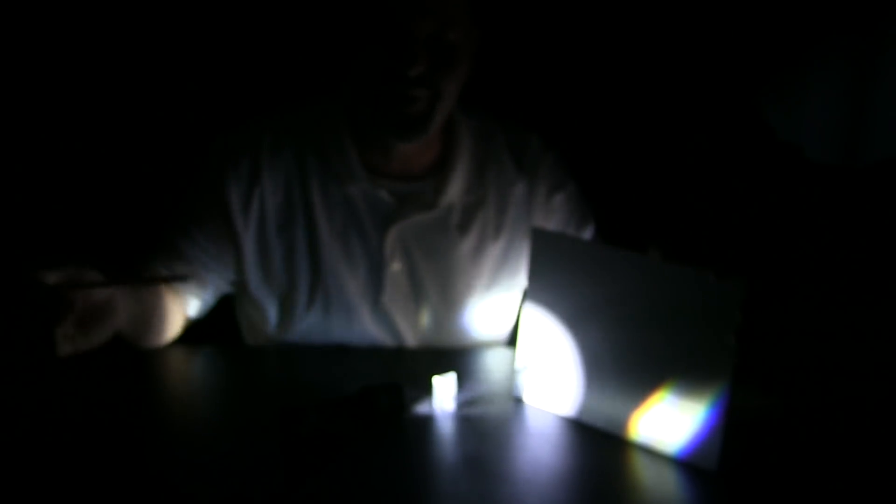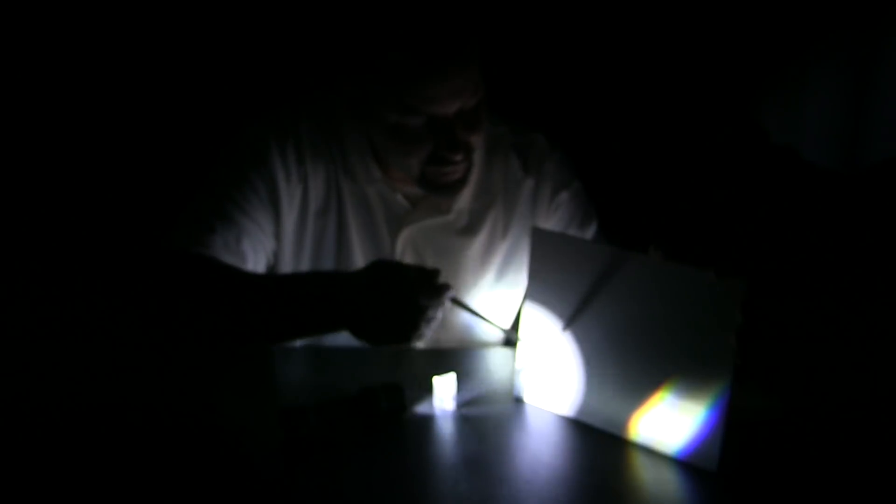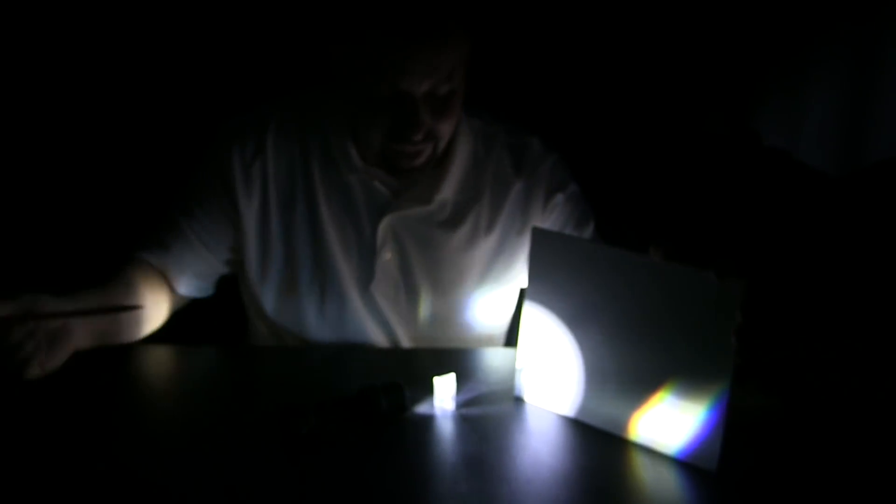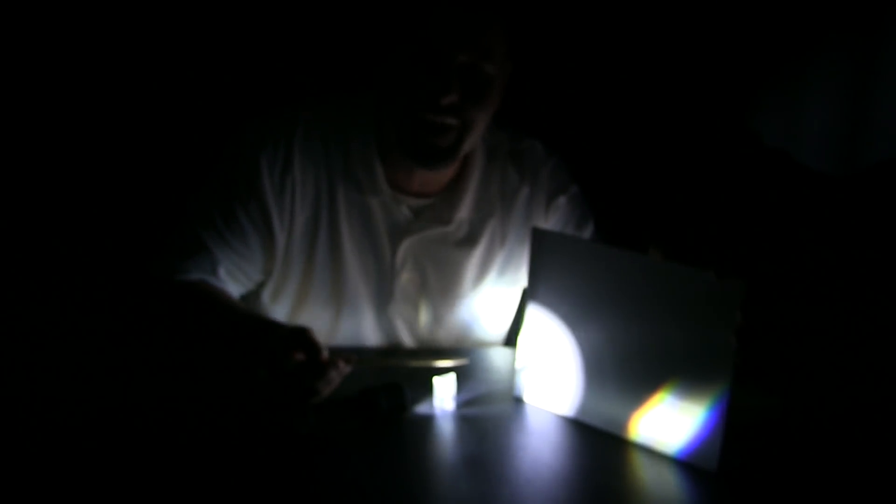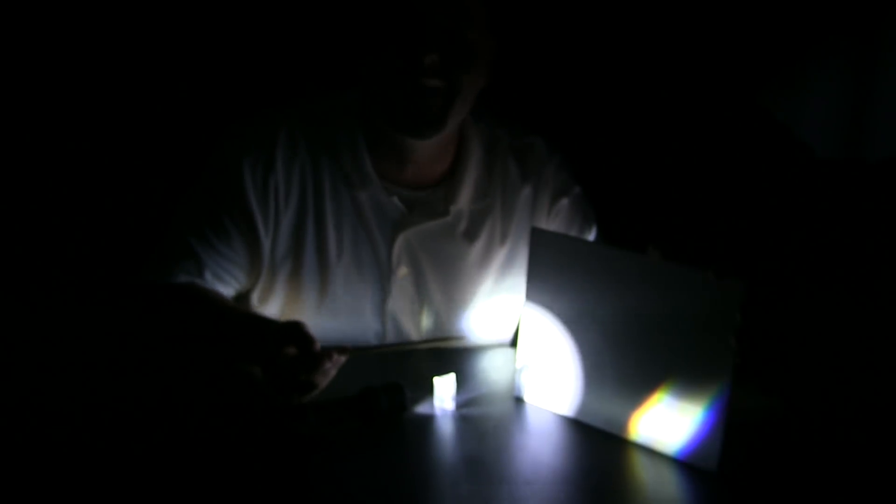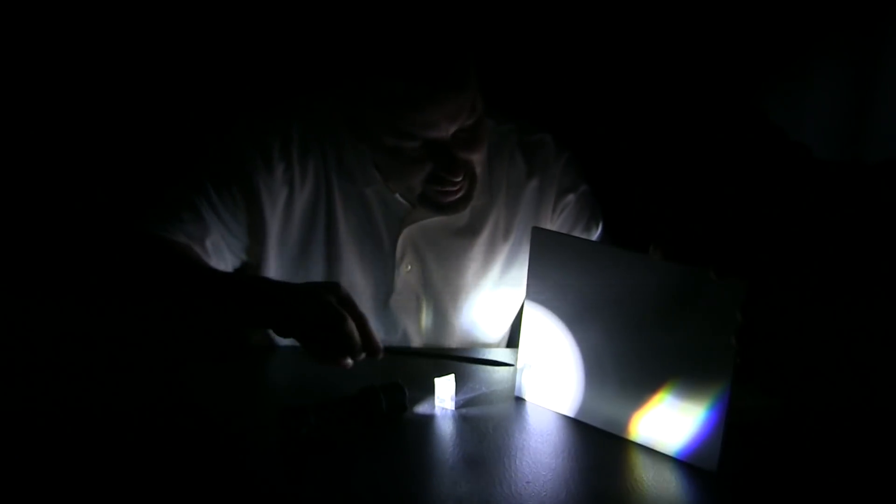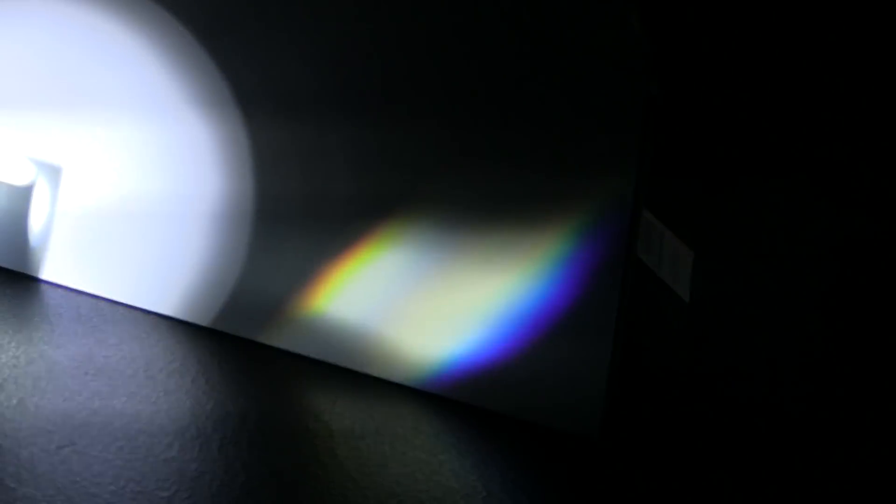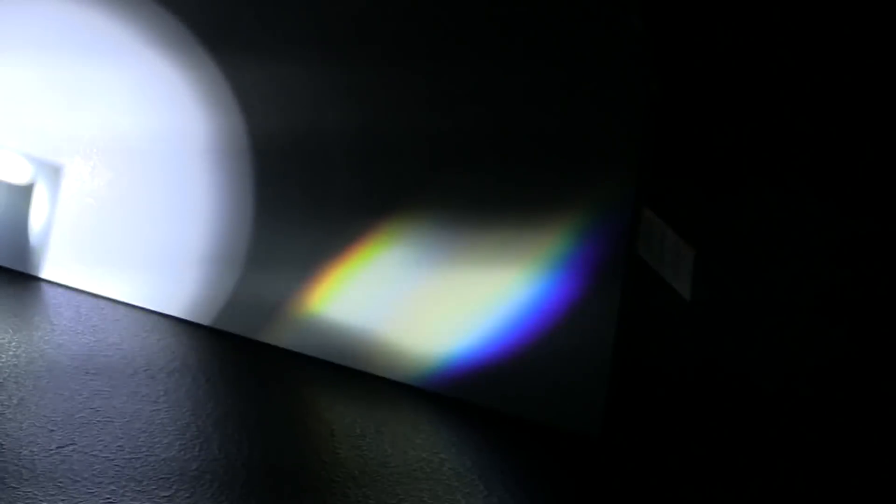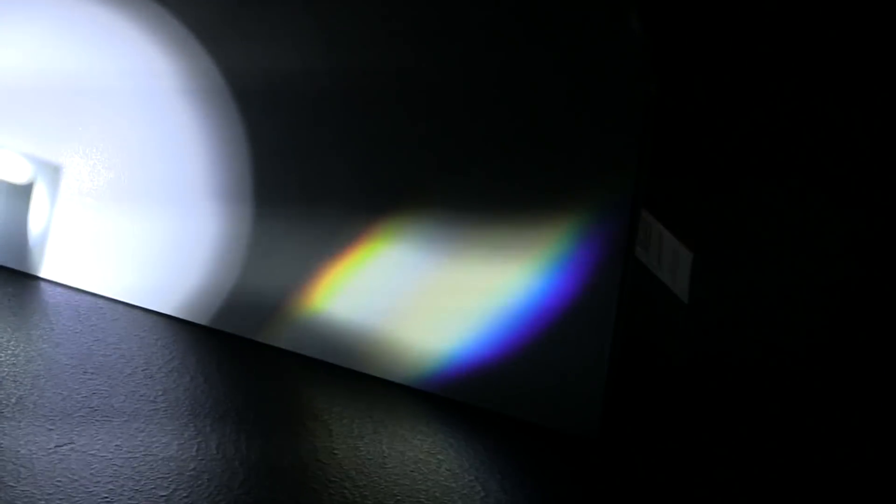But look what is happening over in this corner. What is going on here? Same light, how do I get from this corner to this corner? Well, as the light goes through this piece of glass, that glass slows the light down and bends it, and when it bends it, it puts the light over in this corner. But look what happens to that white light. That white light gets slowed down and bent, and now I can see all the different colors that make up white light. It kind of looks like a rainbow because that is exactly what happens in the sky with the rainbow.